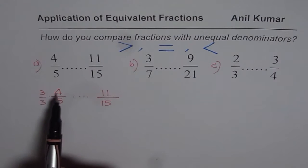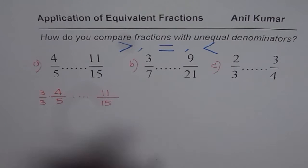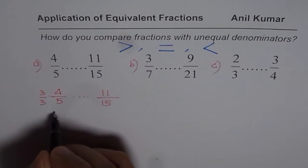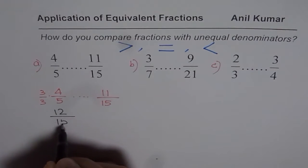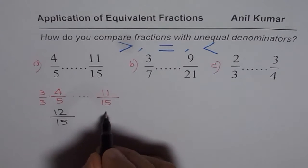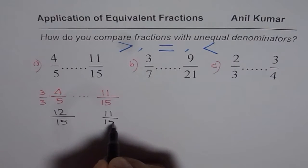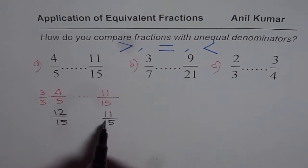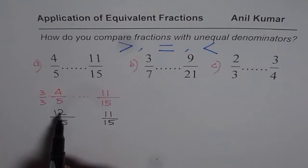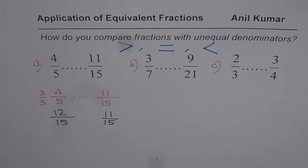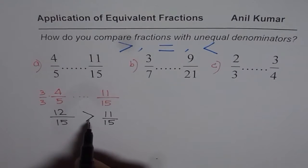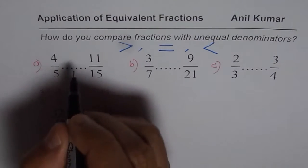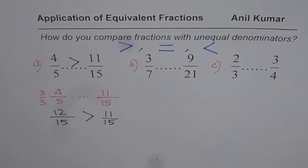When you multiply 4 by 3, you get 12. The denominator, as expected, is 15. The other fraction is 11 over 15. Since the denominators are the same, we know 12 parts from 15 is more than 11 parts from 15. Therefore, the sign should be greater than, and that means 4 over 5 is greater than 11 over 15.